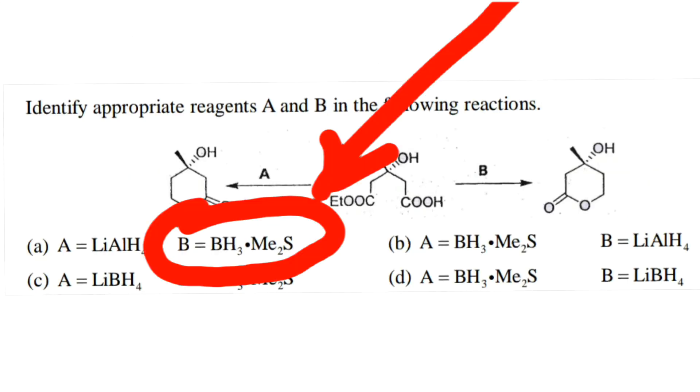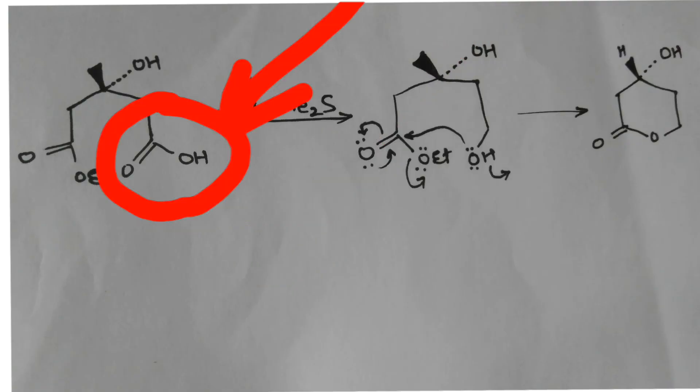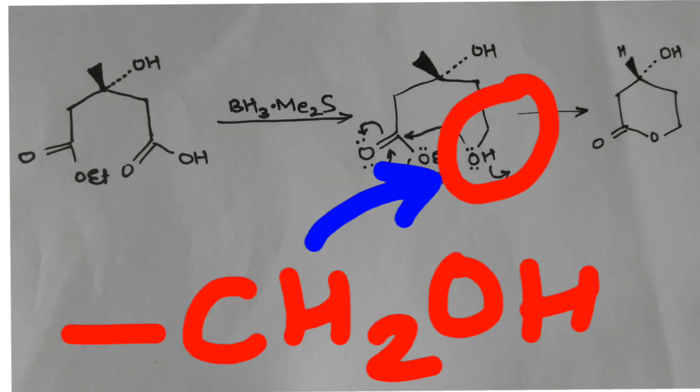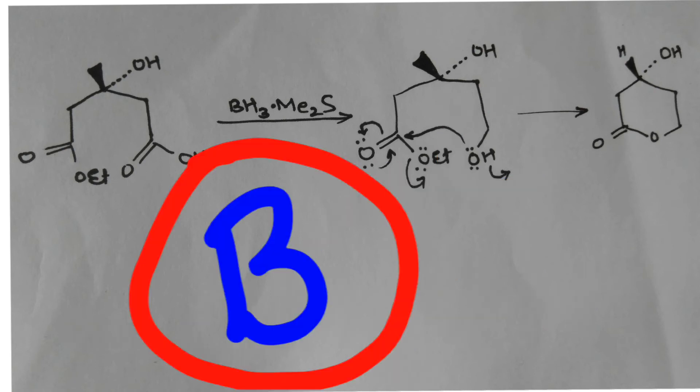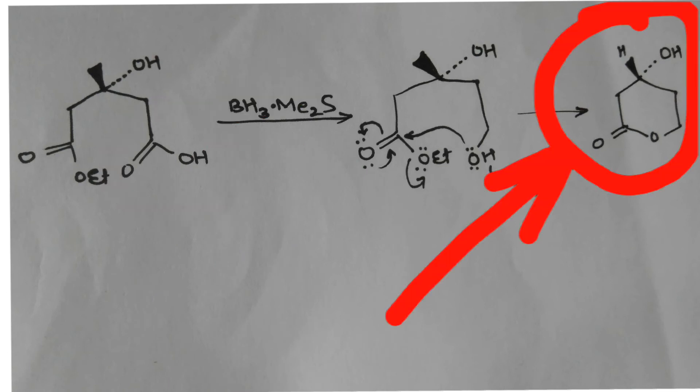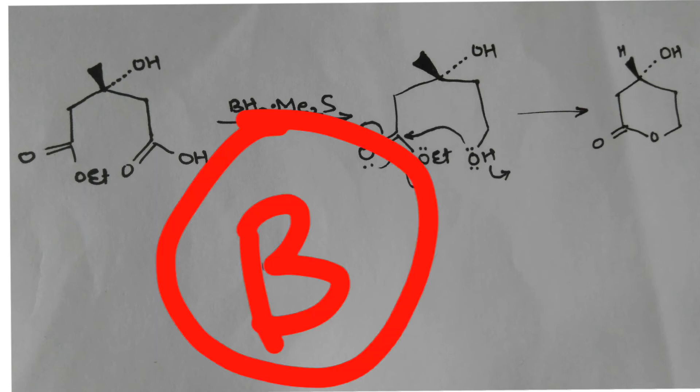This reagent (BH3·Me2S) selectively reduces only carboxylic acid to primary alcohols. That means it will be favorable as the B reagent which is reducing this part so that the lactone ring forms in this way. So this is favorable as the B reagent.